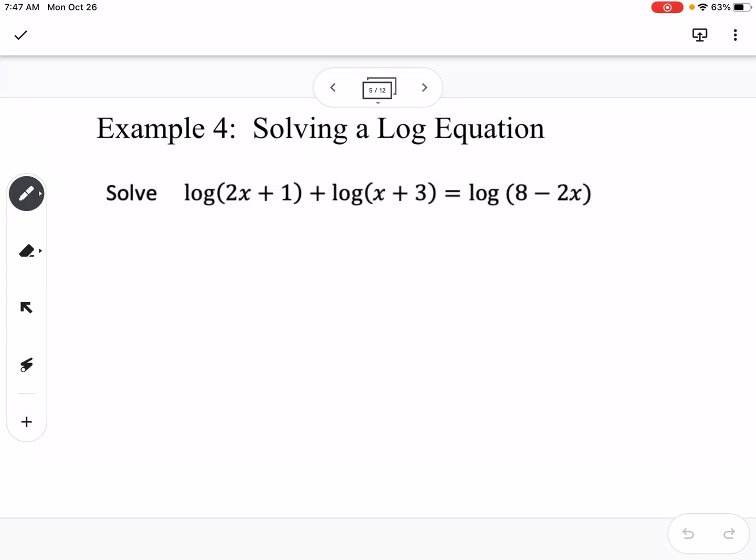Now this next one, we're not going to use the one-to-one property. We're going to use properties of logs to solve this. We have log of 2x plus 1 plus log of x plus 3 equals log of 8 minus 2x. We're going to first step, get everything onto the same side. This would be log of 2x plus 1 plus log of x plus 3 minus log of 8 minus 2x equals 0.